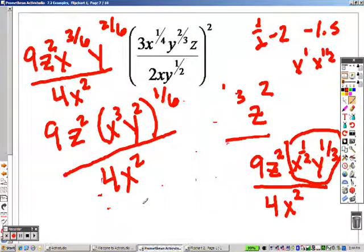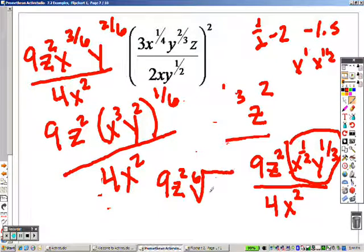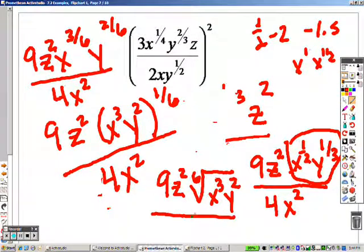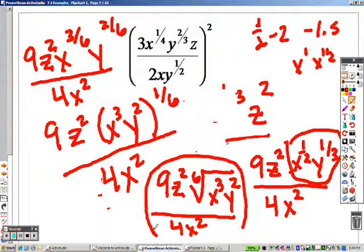And I can rewrite that as the sixth root. So your final answer is 9z squared to the sixth root of x cubed y squared over 4x squared. And that is your final answer. And we will continue when we come back.